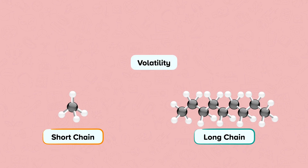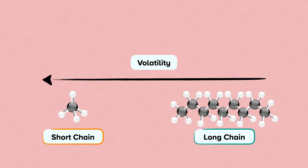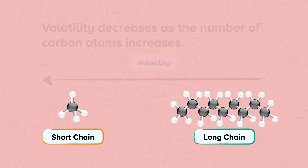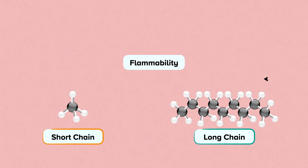Volatility is the tendency of a substance to turn into a gas, which requires intermolecular forces to be overcome. So volatility decreases as the chain length becomes longer. This is because the intermolecular forces are weaker in short chain hydrocarbons.